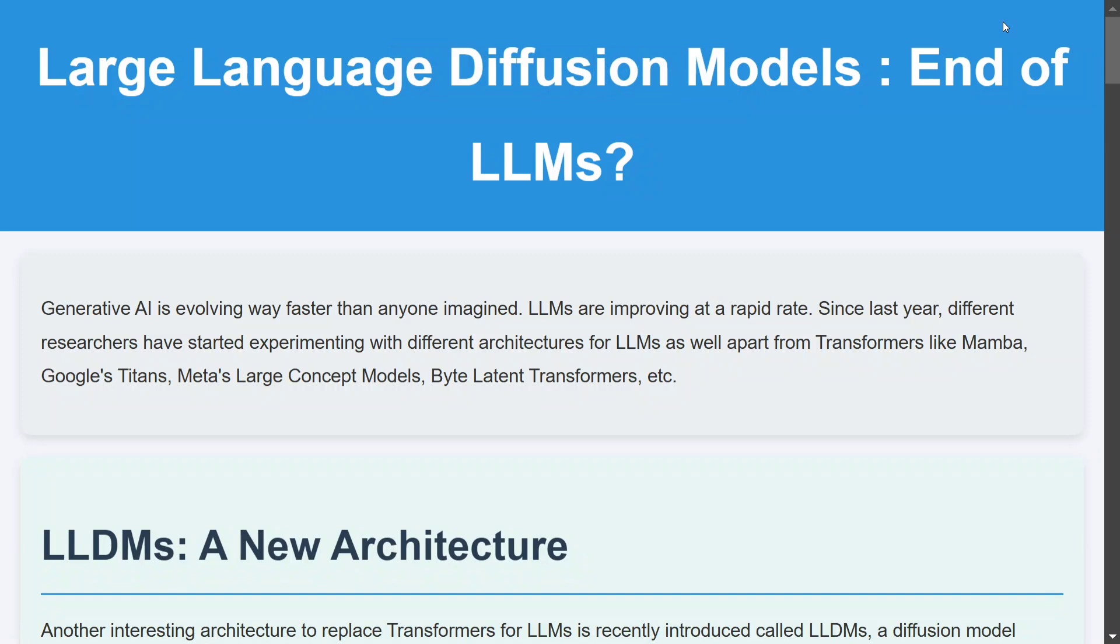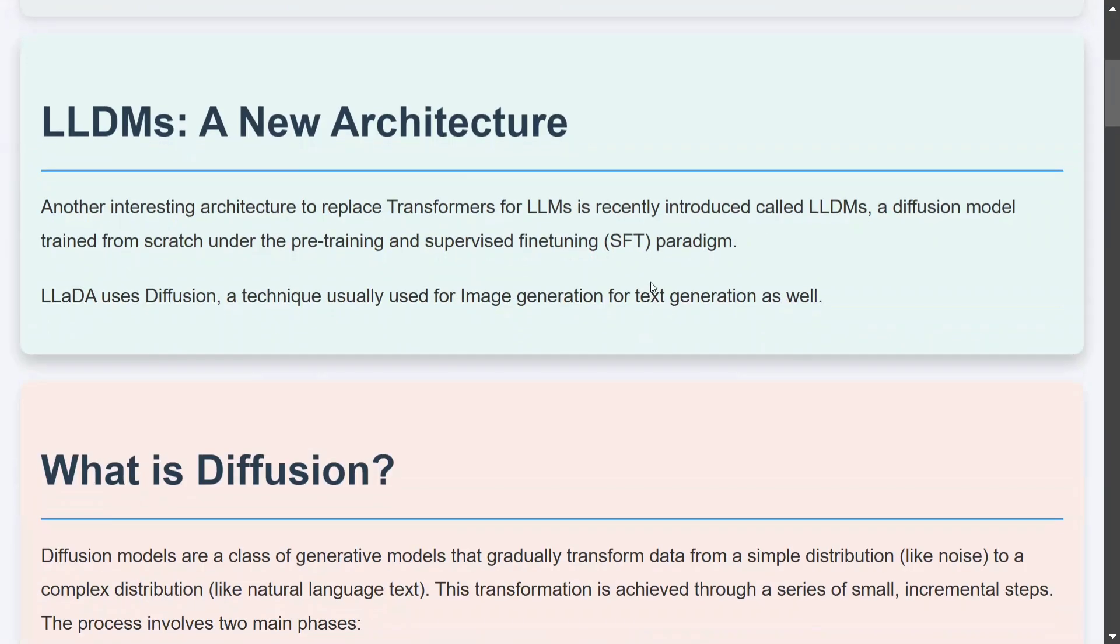In the past few months, we've seen a number of new architectures coming in, including Mamba, Google's Titan, Large Concept Models by Meta, Byte Latent Transformer again by Meta, and now Large Language Diffusion Models. This is a very important architecture that has been introduced because diffusion has never been tied with text generation.